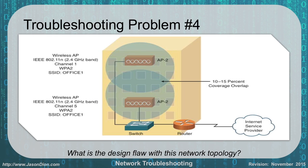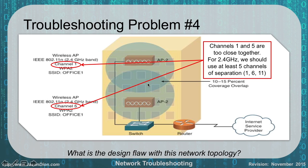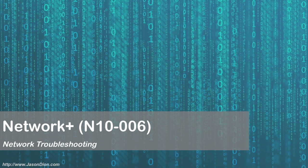Problem 4: Two access points are connected to a switch, then to a router and out to the ISP. We have the correct 10–15% coverage area overlap, and we're using 2.4 GHz. For 2.4 GHz, the correct non-overlapping channels are 1, 6, and 11 — but the access points are set to channels 1 and 5. Channel 5 will cause interference with channel 1 in the overlap area. Change the second access point to channel 6 or 11 to fix the problem. These graphical troubleshooting scenarios, along with command prompt questions like reading route tables or IP configurations, are typical exam question formats.